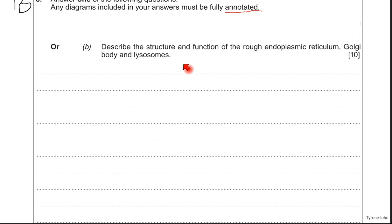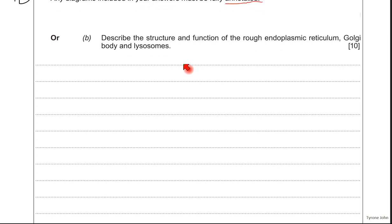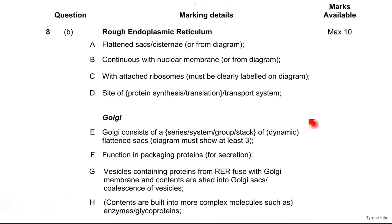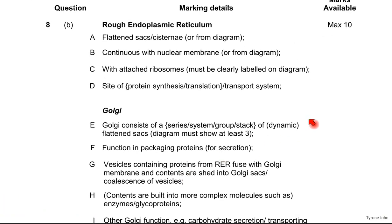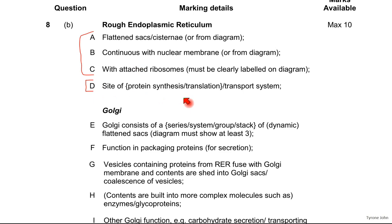This essay is pretty straightforward. I'm going to go through the mark scheme with you. The mark scheme is split into each of the organelles. For the rough endoplasmic reticulum, points A, B, and C are structural features — they answer the structure aspect of the question — and point D would be the function of the rough endoplasmic reticulum.